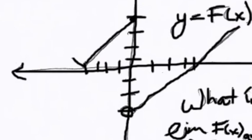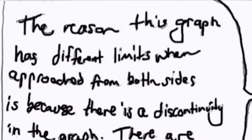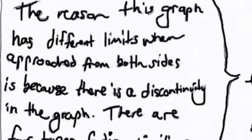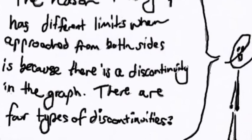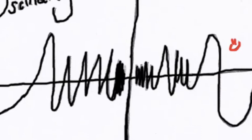From the right, the limit would be 4, and from the left, negative 3? Correct! The reason this graph has different limits when approached from both sides is because there is a discontinuity in the graph. There are 4 types of discontinuities. Removable, jump, infinite, and oscillating. To help you understand the oscillating discontinuity, Mr. Sandwich Theorem will explain to you.